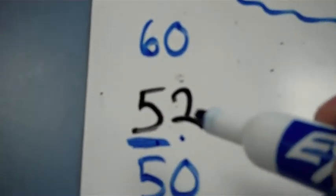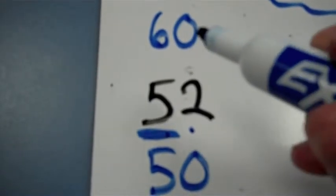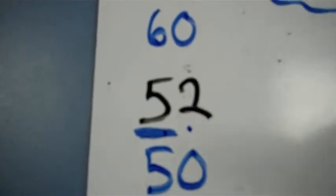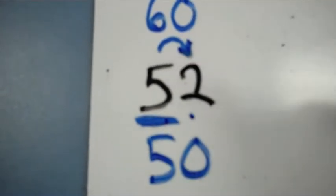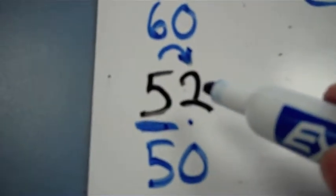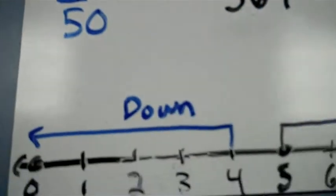Then we ask ourselves, what are the closest tens to 52? Well, there's 5 tens, 50, and that's a little lower, and the next 10 is 60. Add an extra 10 and you get 60. So which is closer, 60 or 50? The way to find that out is to look at the next digit in the ones place. We look at this 2, and we look down here at our chart.